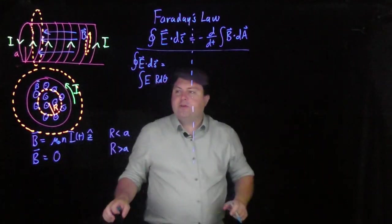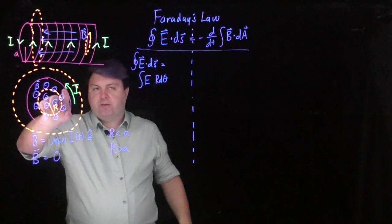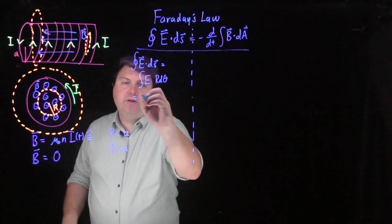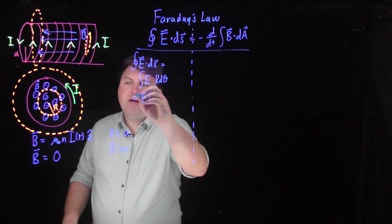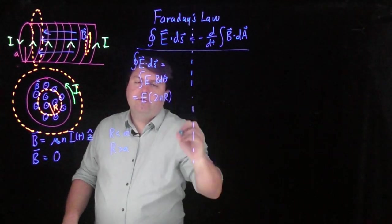But our electric field is going to be in the same direction as our loop because we chose it, so we just get E times, for a full loop, 2 pi r.